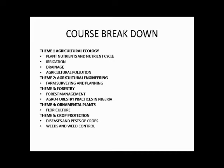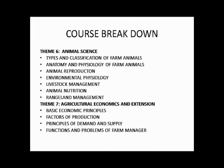Theme 4 covers ornamental plants — we'll be talking about floriculture, and you'll get to know what that means in the course of the class. Theme 5 is Crop Protection, where we learn about diseases and pests of crops, weeds and weed control. Theme 6 is Animal Science, covering size and classification of farm animals, anatomy and physiology of farm animals, animal reproduction, environmental physiology, livestock management, animal nutrition, and rangeland management.